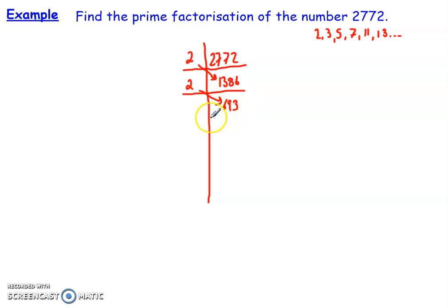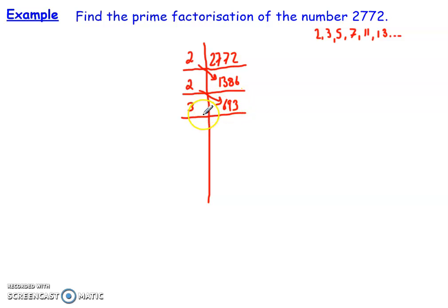693 is no longer even, so I can't divide it by 2 anymore. I move on and ask: can I divide it by 3? Well, 693 is divisible by 3, so that's the one I move on to next. 693 divided by 3 gives me 231. I then ask: is 231 divisible by 3? Yes it is, so I divide it by 3 and get 77.